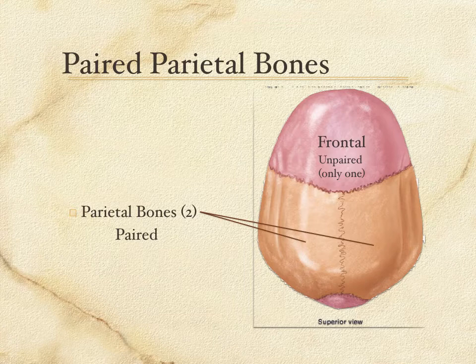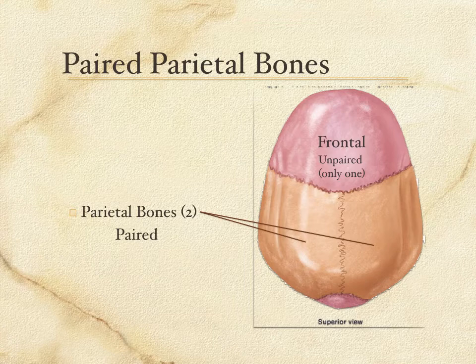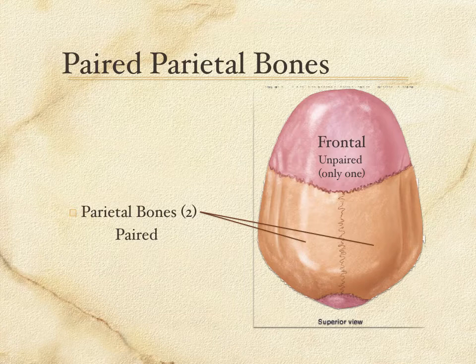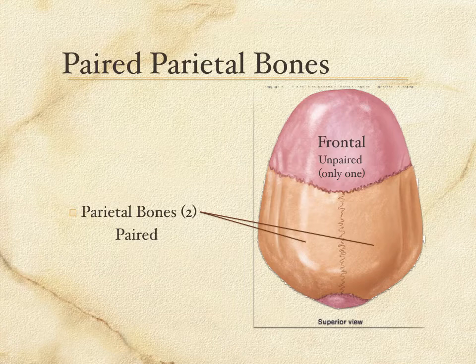In the cranium there are two unpaired bones; in the face there are six paired bones and two unpaired bones. The frontal bone is unpaired — one and only one — and there are two parietal bones. Interestingly, the frontal bone does develop in the womb as two separate bones, much like the parietal bones. Yet something in the genetic code tells those two pieces to unite completely as one, whereas the two parietal bones remain separate.